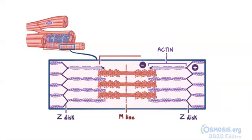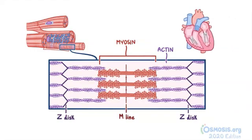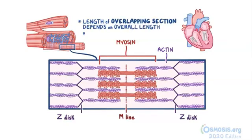Attached to the M-line are myosin filaments — thick bundles of myosin proteins with two globular heads. During muscle contraction, the myosin heads grab onto the actin filaments and pull them towards the M-line, bringing the two Z-discs closer together. The force of contraction during systole depends on the number of myosin heads that bind to actin, which depends on the length of the overlapping section between actin and myosin — and that in turn depends on the overall length of the sarcomere.